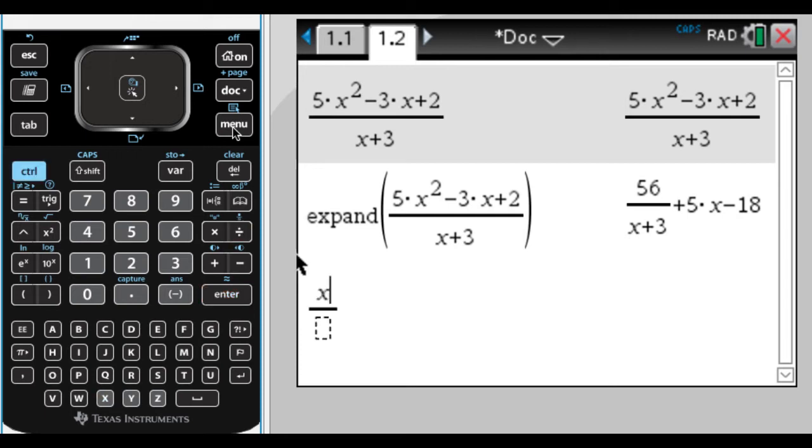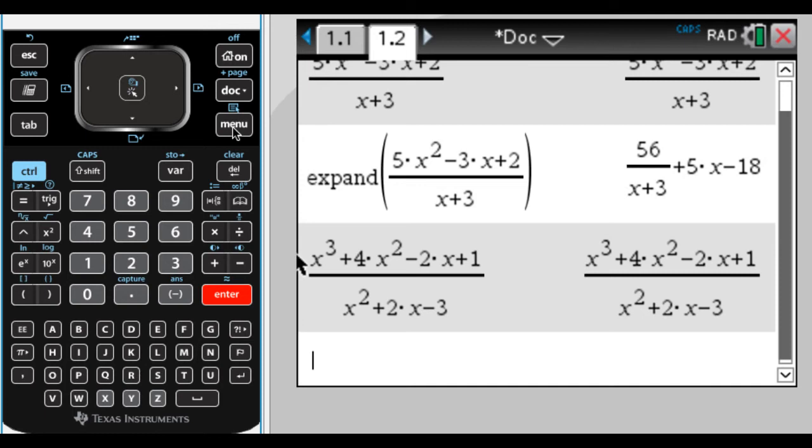But sometimes you'll do a problem on the calculator, and the answer ends up a little different from what you're expecting. So let's look at one of those. So I've got x cubed plus 4x squared minus 2x plus 1 over x squared plus 2x minus 3. So if I hit enter here, it's just going to return that, and that's not all that useful.